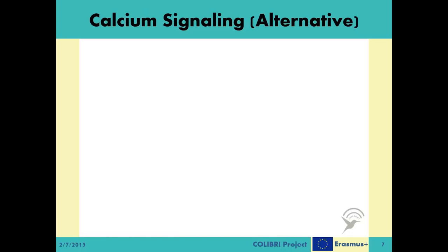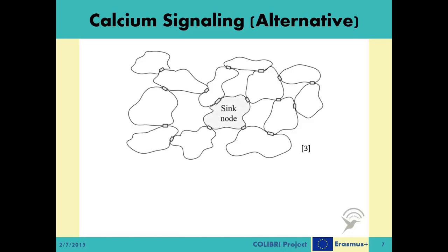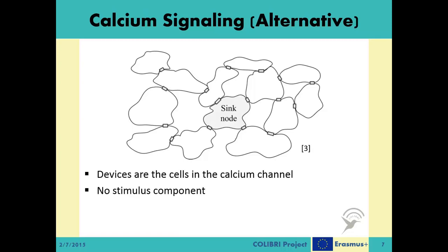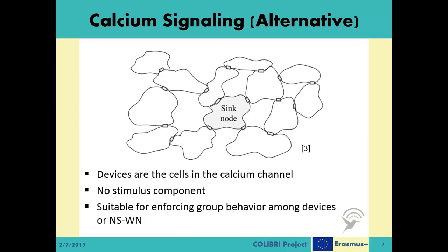This is not the only way of using the natural ICW mechanism as a starting point of a communication system. We can devise alternative communication models and systems utilizing this phenomenon. For example, we can lose the calcium-capable and non-calcium-capable device distinction to come up with a more generic model. In this alternative calcium signaling system, all the devices in the communication system are calcium-capable and there are no external stimulus components. Similar to the wireless sensor network topology, there is a sync node in the center of the topology and numerous other regular nodes with varying hop distances to the central sync node. The system is focused on applications where either a group behavior or a sensing activity is needed from a high number of nodes covering an area.